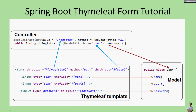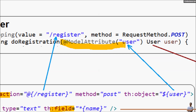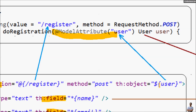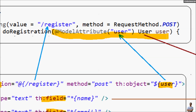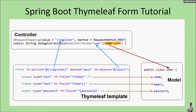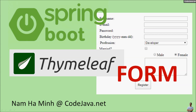To summarize: in the model layer we need a model class to represent the information in the form. In the form we use normal HTML tags with Thymeleaf attributes to associate form fields with fields in the model object. In the controller layer we use the @ModelAttribute annotation to map the model object from the form — Spring MVC automatically reads the form data into the user object. Thank you for watching, please subscribe to my channel. I'm Amin from codejava.net.